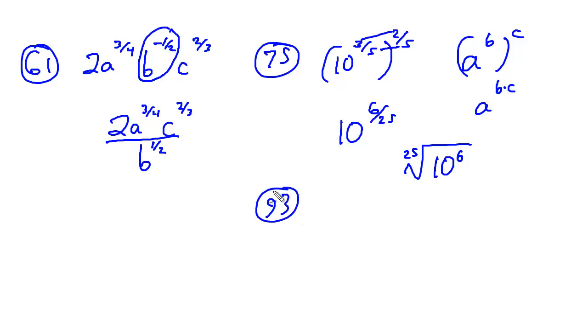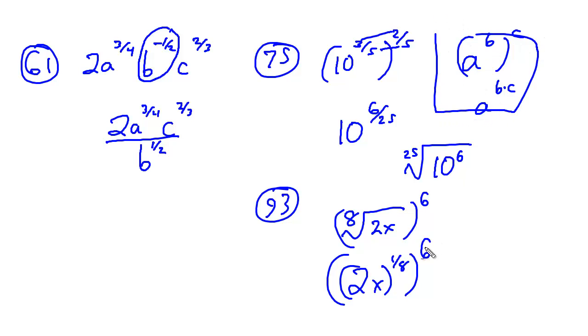And problem number 93 here has the eighth root of 2x raised to the 6th power. And it would be best to turn what's inside into a fractional exponent. So 2x raised to the 1 8th power, and this whole thing would be raised to the 6th power. So you can see that we're going to keep playing with this formula. This a to the b, c is a to the b times c. So top times top, bottom times bottom. We would have 2x raised to the 6 8ths, but we would want to reduce that of course. And we would reduce that to 2x raised to the 3 4ths.